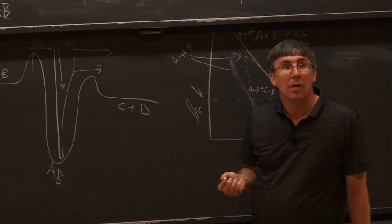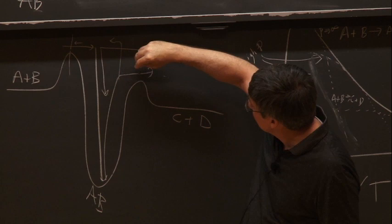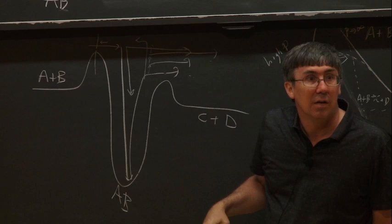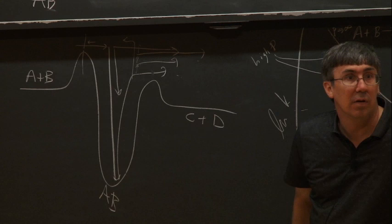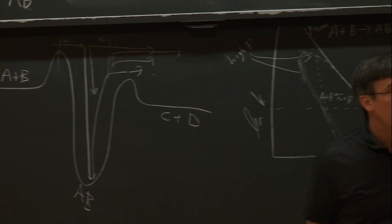If I start from AB and lower the pressure, the same thing happens — everything gets slower because I need collisions to drive the molecule up in energy. And this last step to A+B becomes even more unlikely, because molecules climbing up on the way to dissociation can exit to C+D. The slower the collisions, the more likely they just exit through C+D. So the yield of A+B will drop off faster than the yield of C+D as I lower the pressure. In the really high-pressure limit I might calculate a 100:1 product ratio, but at lower pressure it could be 1,000:1 or 10,000:1.